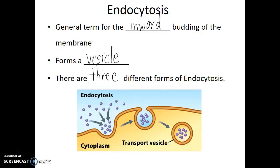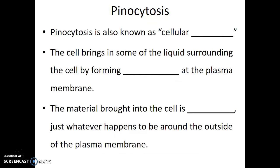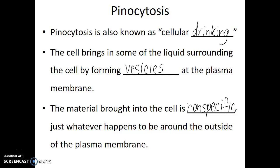There are three different forms of endocytosis. The first form is very nonspecific — it's just bringing in any material that happens to be outside of the cell at the time of vesicle formation. This is known as pinocytosis, or cellular drinking. The cell brings in some of the liquid surrounding the cell by forming vesicles at the plasma membrane, and the material brought into the cell is nonspecific — just whatever happens to be outside of the plasma membrane at the time.